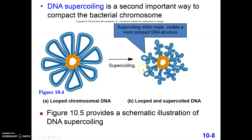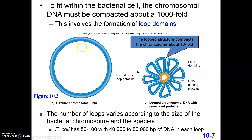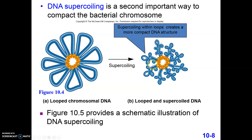The additional compaction is achieved through DNA supercoiling — the equivalent of taking an old-school phone cord and getting extra wraps in it, causing it to twist up on itself. The flower structure's loops are compacted by essentially cutting the DNA and twisting it around itself so it wraps up extra tightly. So we have the circle, we form the loop structures with DNA-binding proteins, and then supercoiling makes it much, much smaller.